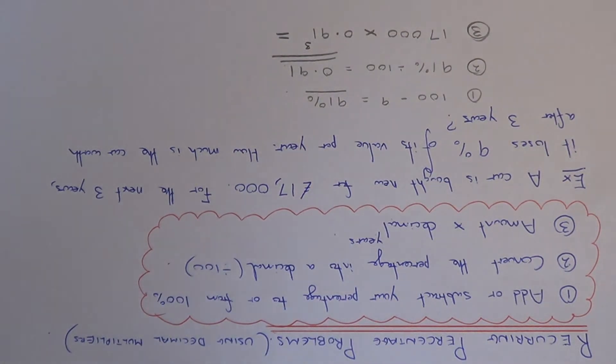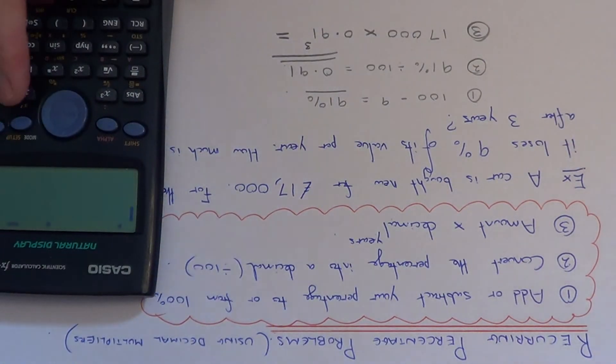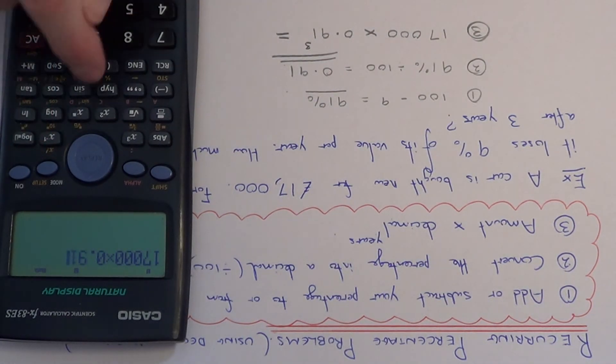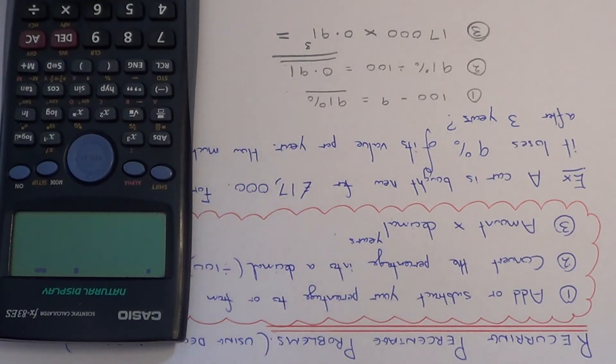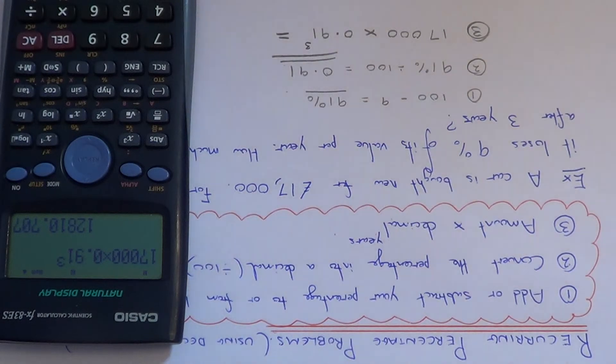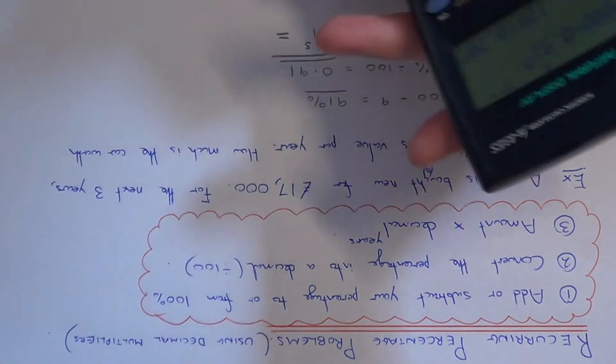If we type this on our calculator, we get 17,000 times 0.91 cubed, and we get an answer of £12,811, that's to the nearest pound.